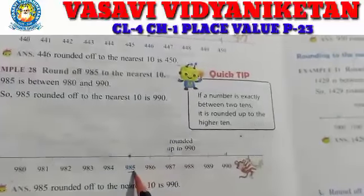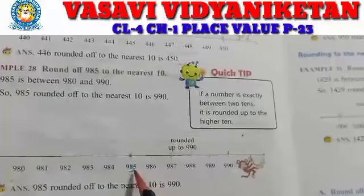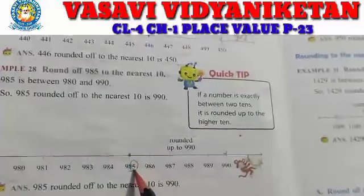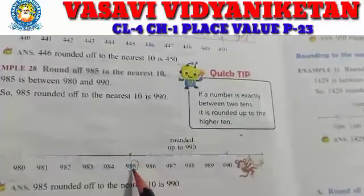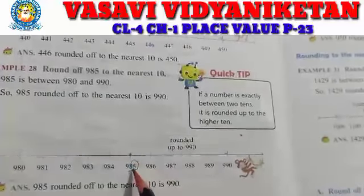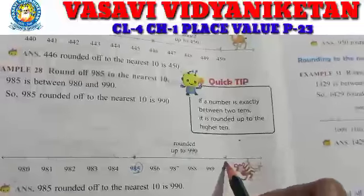But 985 — if 5 is there, it is halfway. So in this example, because we have a 5, we have to go above and round up.